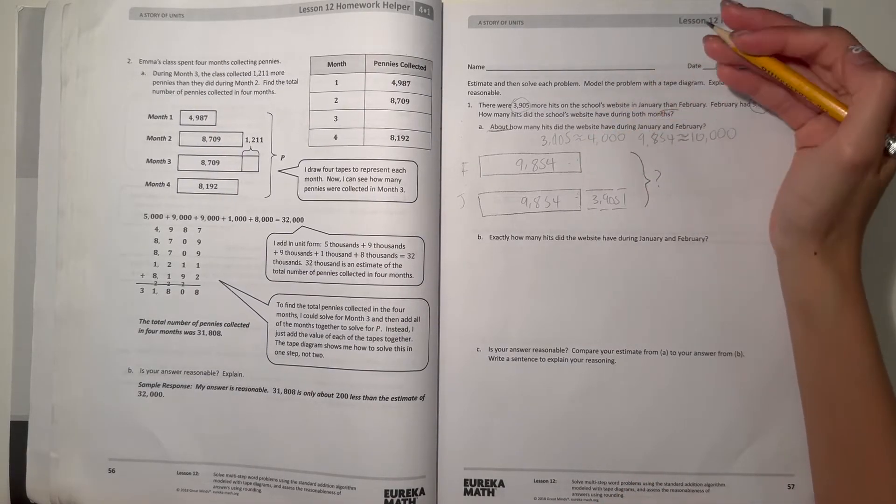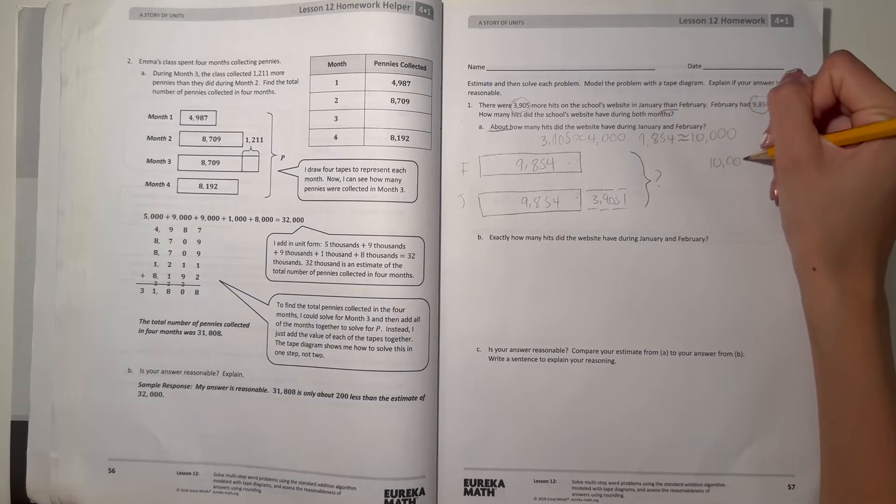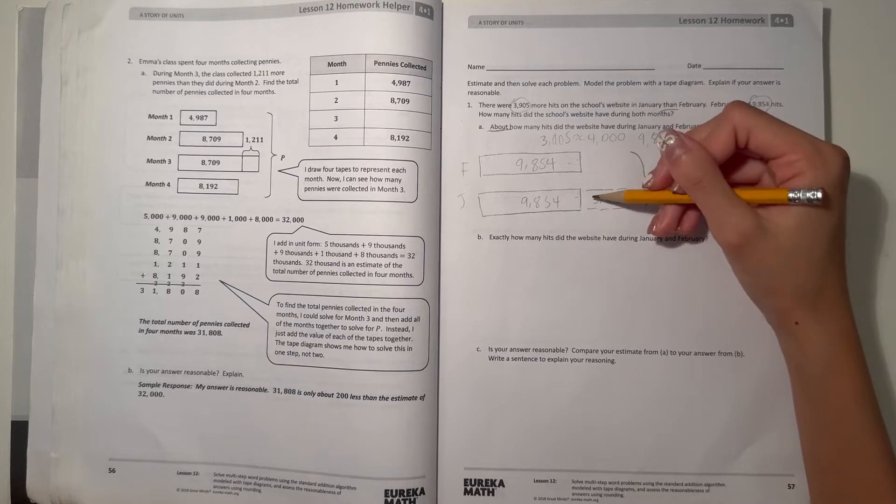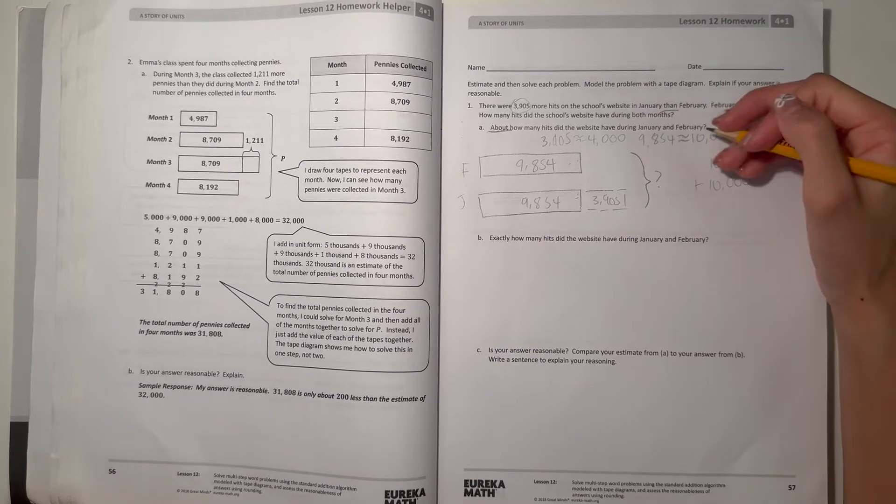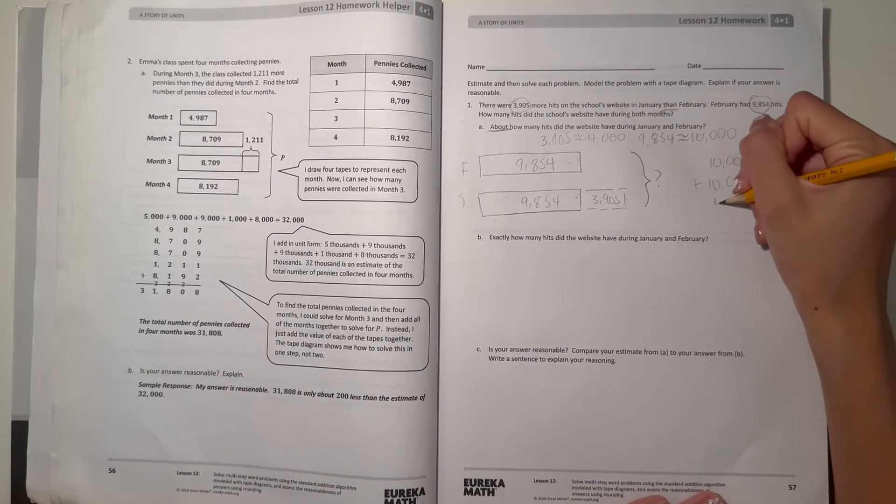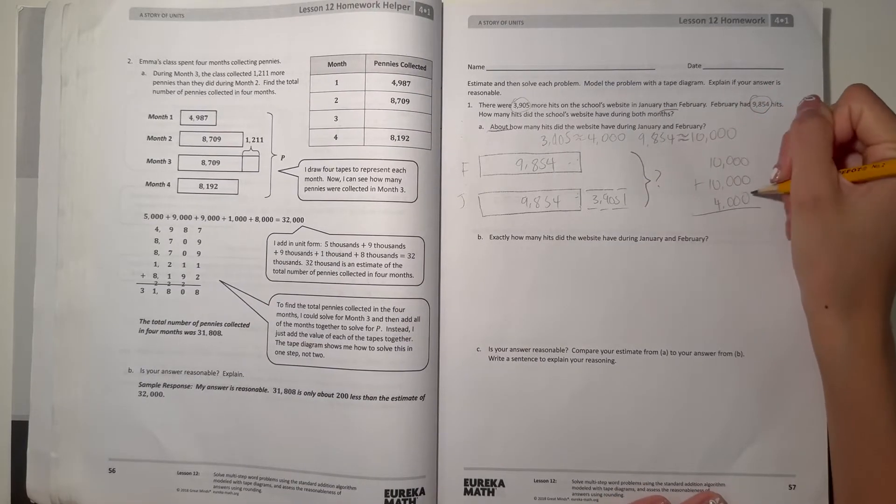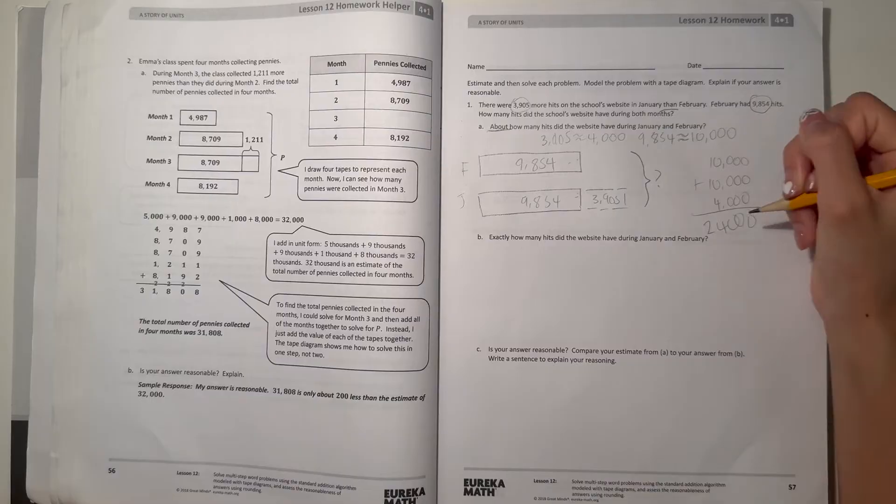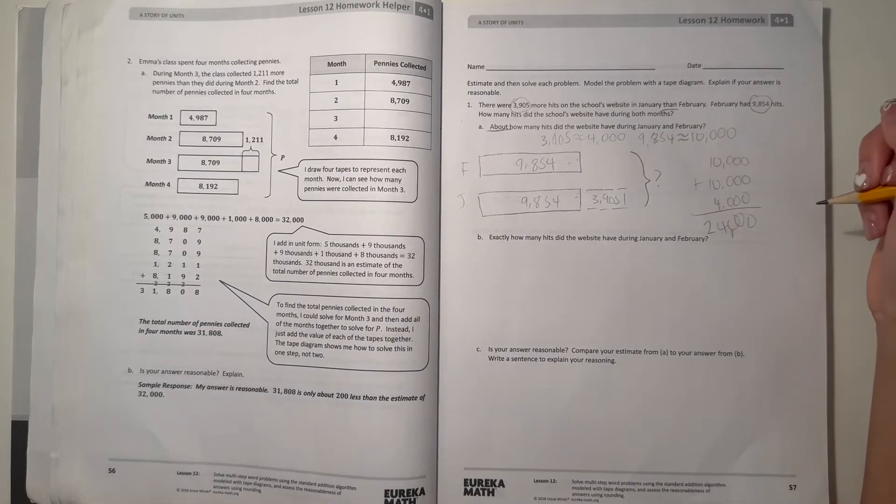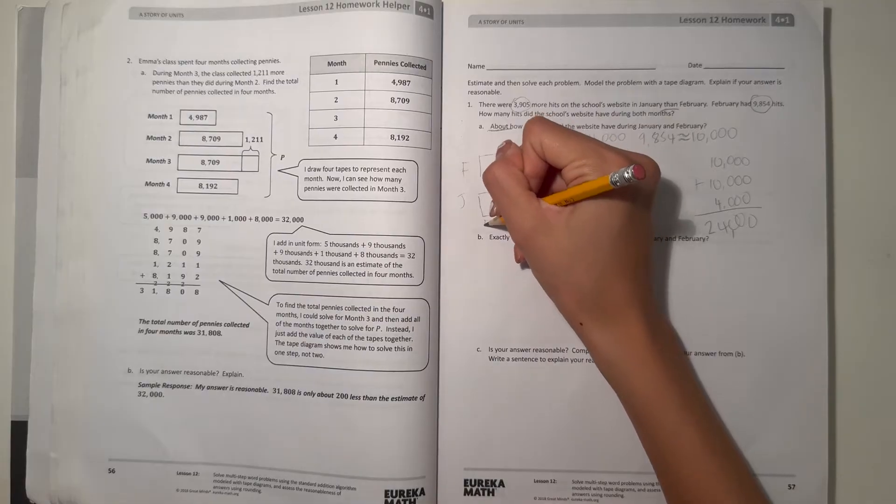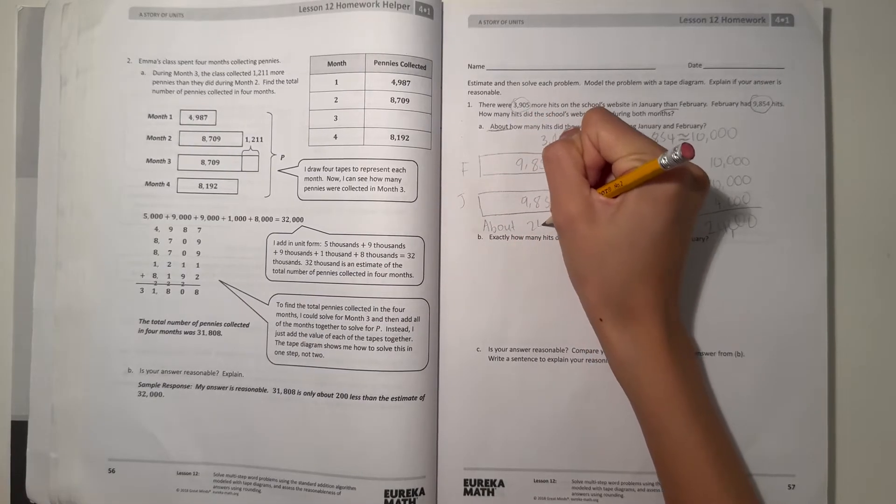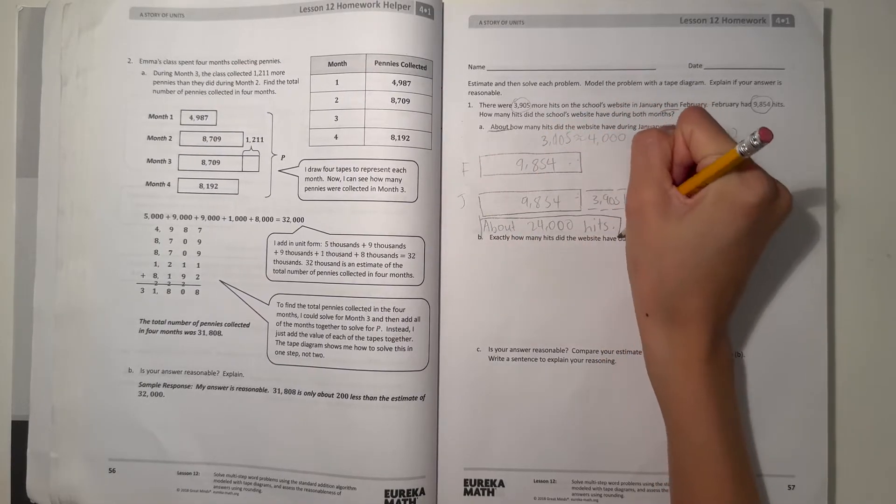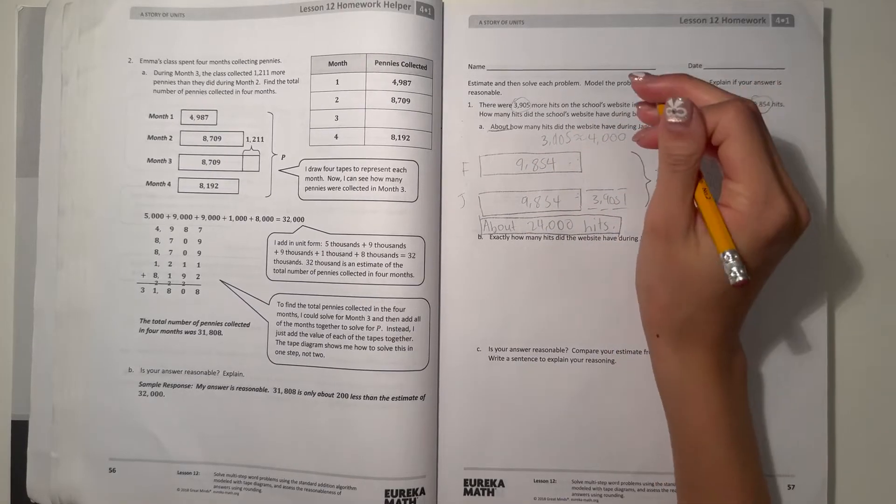3,905 can round to 4,000, rounding to the nearest thousand. And then 9,854 rounds to 10,000. So let's make our tape diagram. 10,000 plus 10,000 plus 4,000. That gives us 24,000. So it has about 24,000 hits.